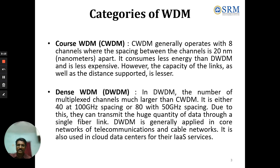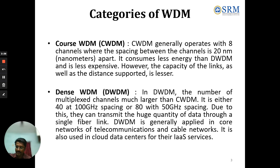Moving into Dense WDM, the number of multiplexed channels is much larger than CWDM. It is either 40 channels at 100 gigahertz spacing or 80 channels at 50 gigahertz spacing. Because of this, DWDM can transmit a huge quantity of data through a single fiber.